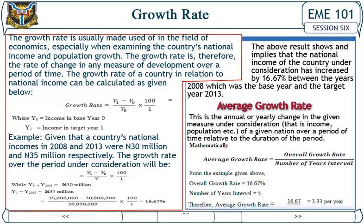Example: Given that a country's national incomes in 2008 and 2013 were 30 million naira and 35 million naira respectively, the growth rate over the period under consideration can be calculated, where year 0 (2008) equals 30 million and year 1 (2013) equals 35 million. The result shows that the national income of the country has increased by 16.67 percent between the base year 2008 and the target year 2013.